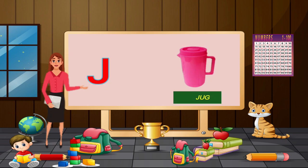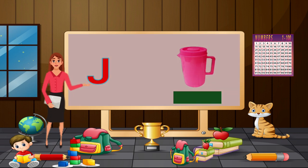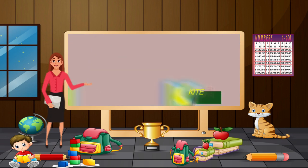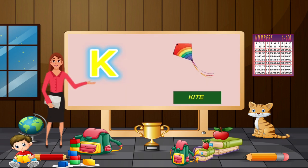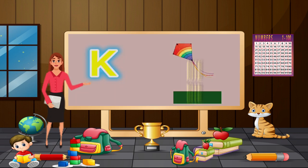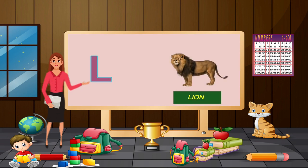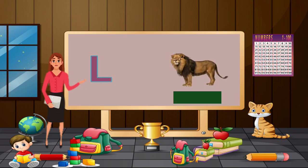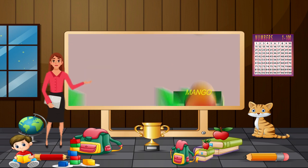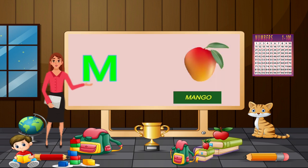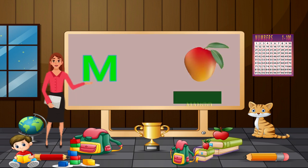I for ice cream, J for jug, K for kite, L for lion.